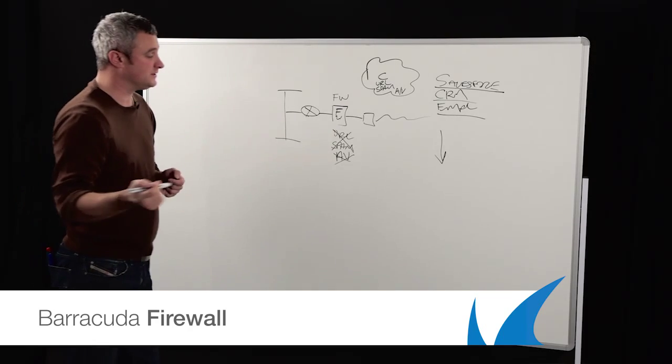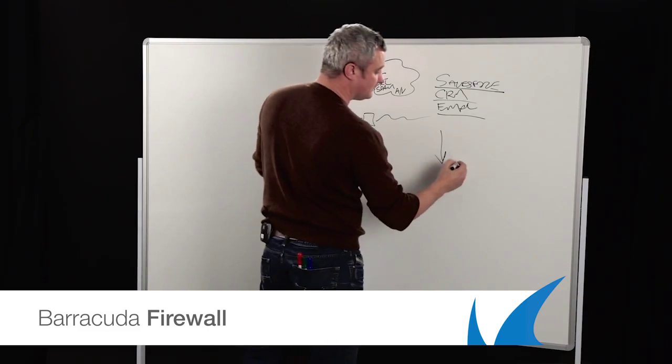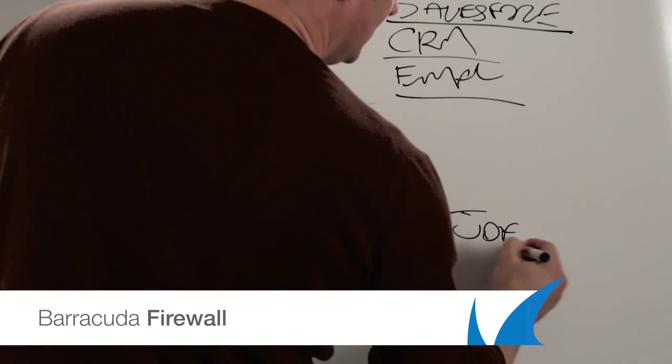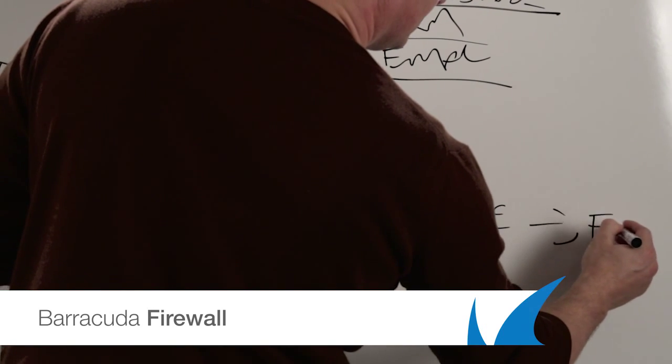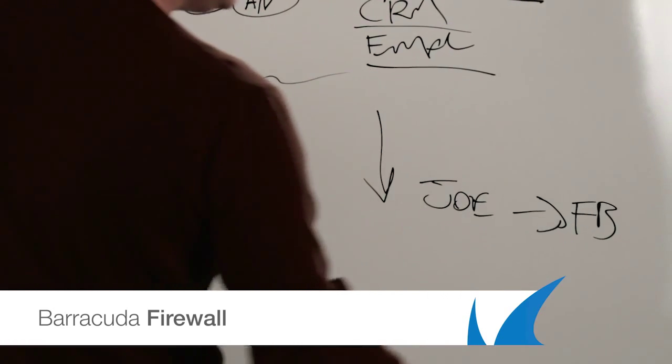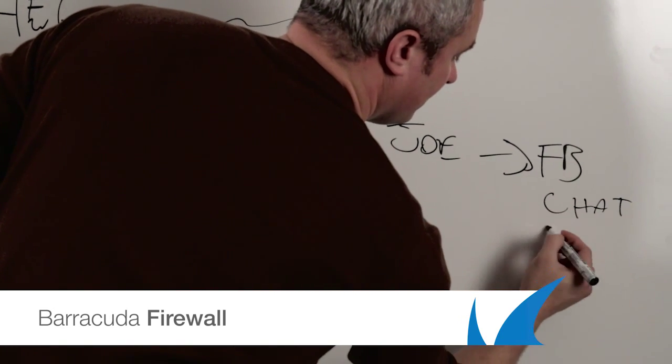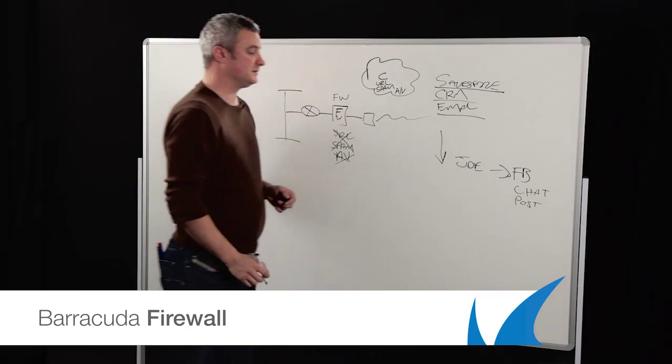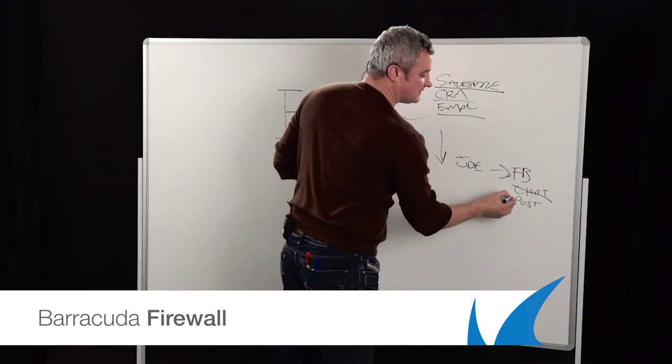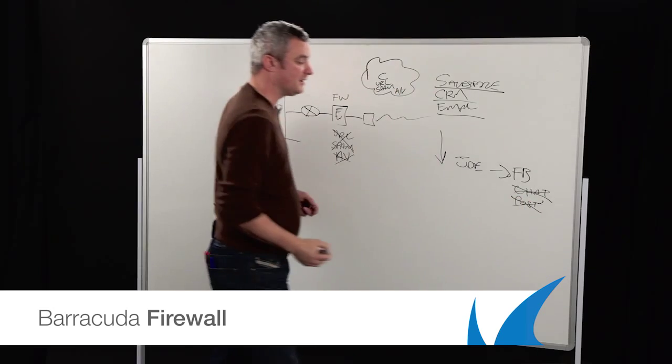With the social networking features, we can go in and we can be very clear. We can say, okay, Joe, for example, can go to Facebook, but what you might say is there's no chat, there's no posting, but everything else they can do. So all of these features are going to be turned off, but they can go to Facebook.